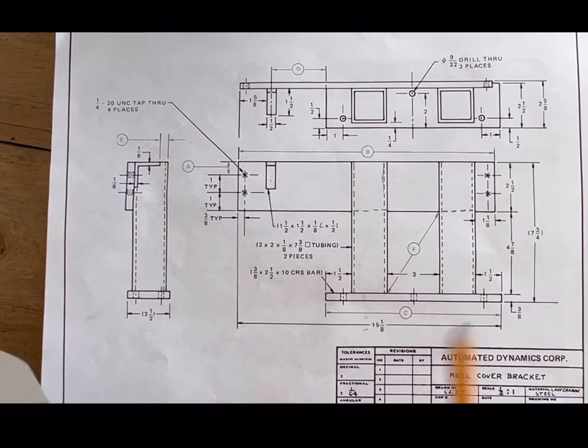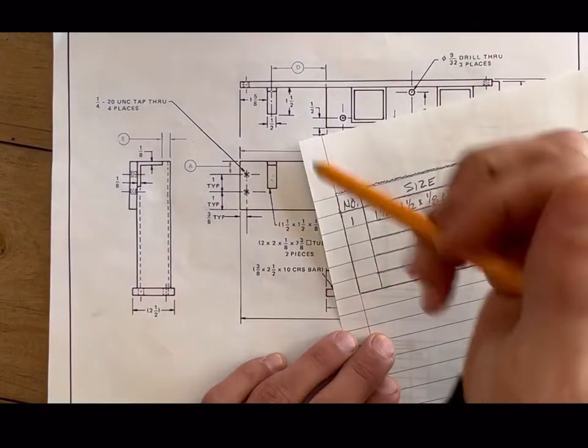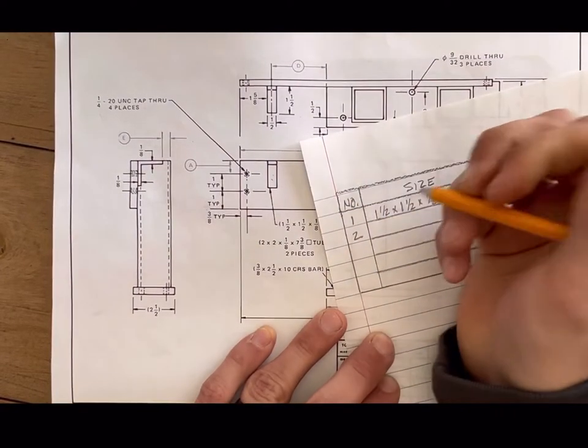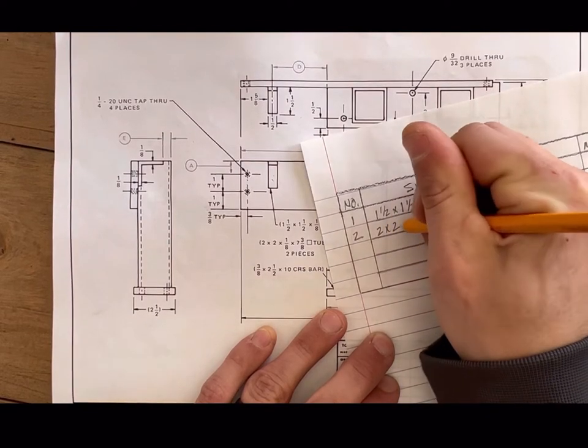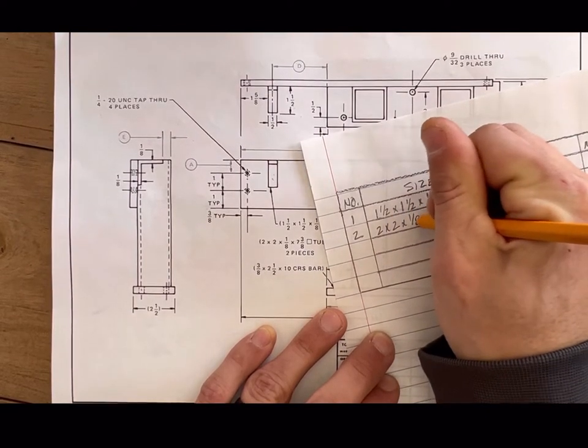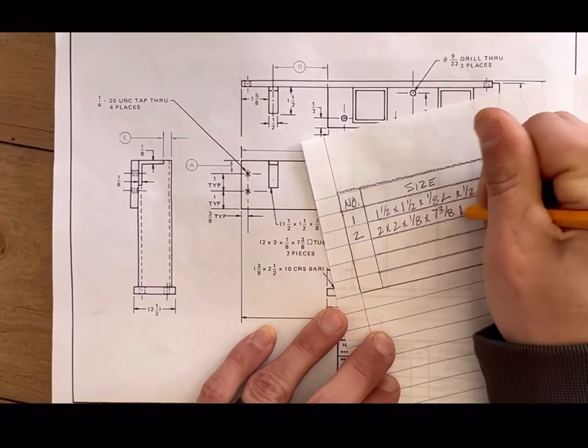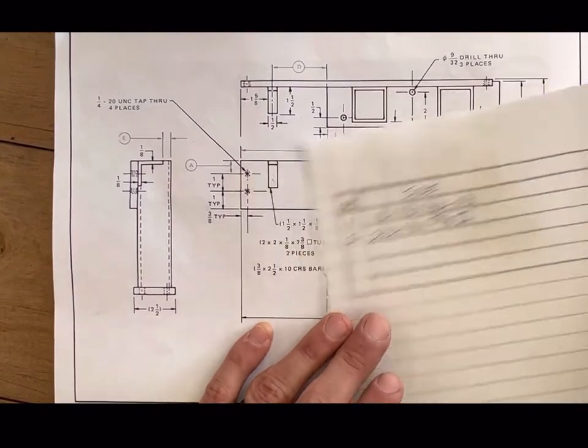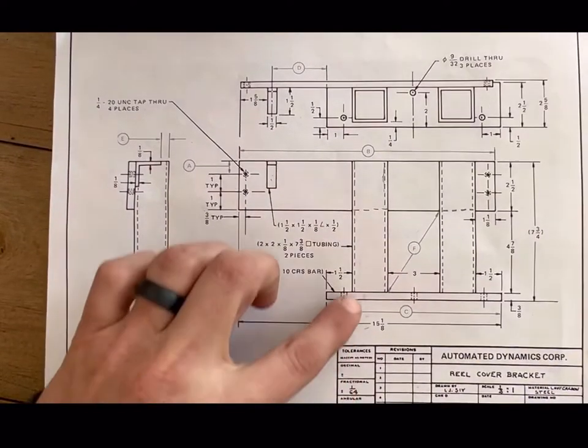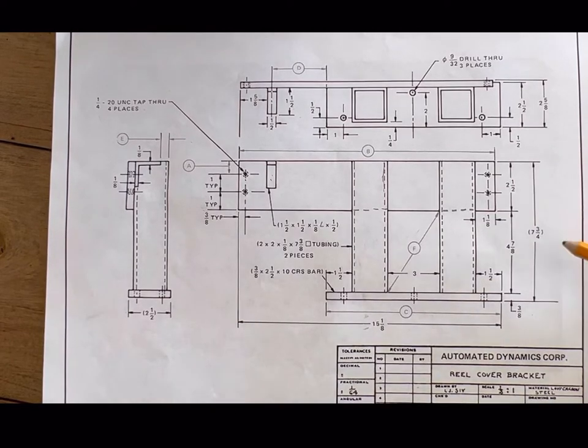And then take that final number and divide by two since we have two. But let's just keep this simple. We're going to call this part number two.